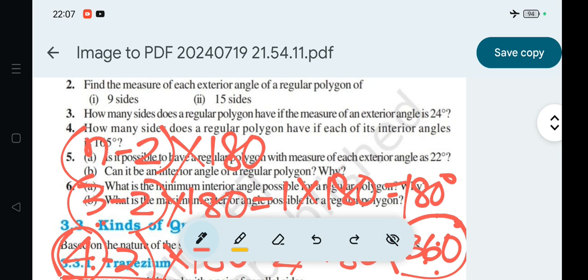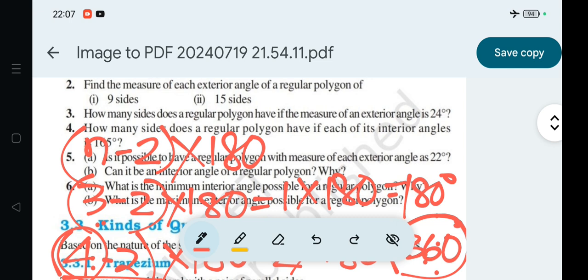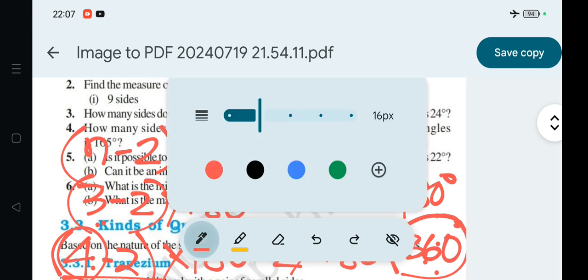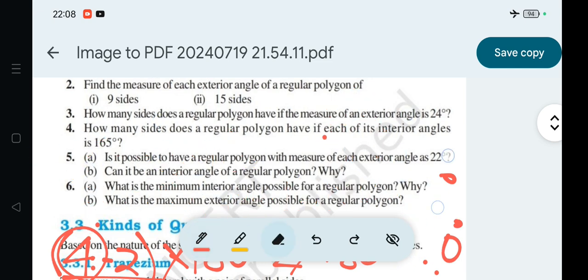A triangle has a minimum of three sides. If we consider a regular triangle, which is an equilateral triangle, and we want to find the minimum interior angle...